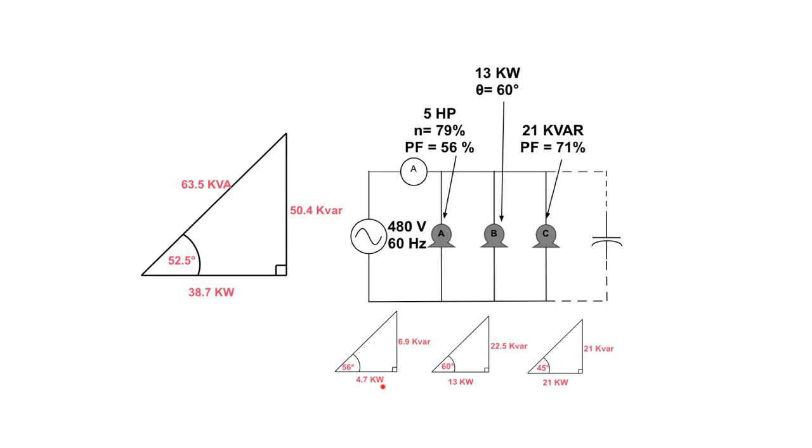Now we're just going to go ahead and we're going to add up all of our Watts together because they're all heading in the same direction. They're all in the bottom of the triangles. So 4.7 plus 13 plus 21 gives us 38.7 kilowatts on the bottom. 6.9 plus 22.5 plus 21 gives us our total kVar of 50.4 kVar. Using Pythagorean theorem, 38.7 squared plus 50.4 squared, the square root of that gets us 63.5 kVA. And then we can take 38.7 kilowatts divided by 63.5 kVA, inverse cosine that, and we get an angle of 52.5.